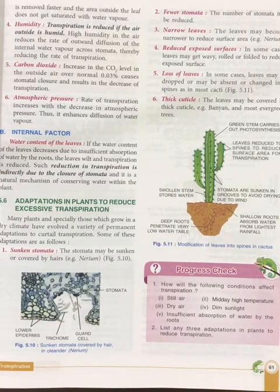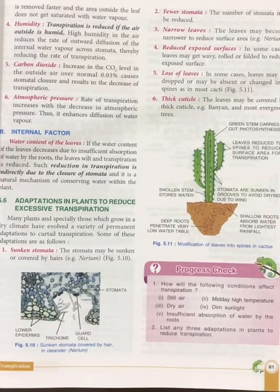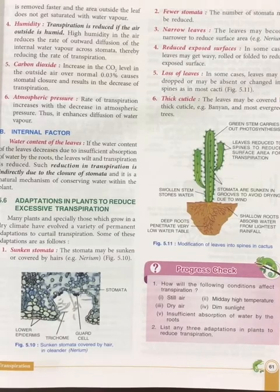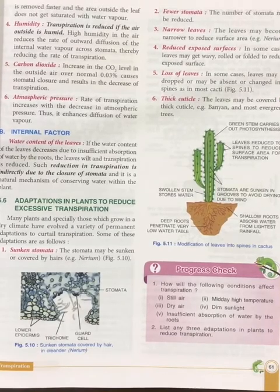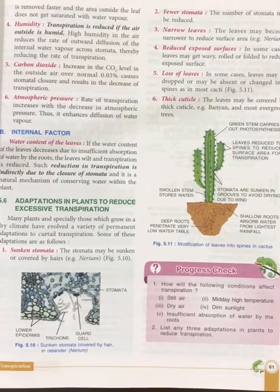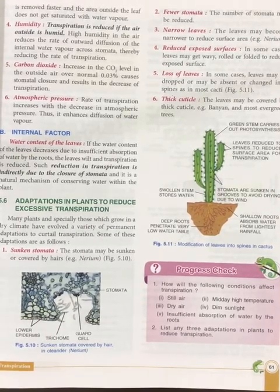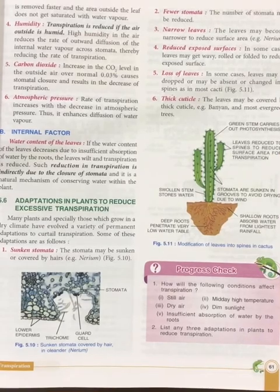The fifth adaptation is loss of leaves. In some cases, leaves may be dropped, may be absent, or may be changed into spines, as in the case of the cactus.